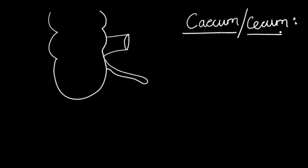The cecum is considered to be a large blind sac at the commencement of the large intestine. This junction is none other than the ileocecal junction, and attached to it is the appendix.